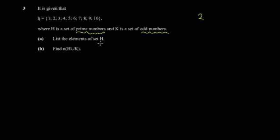First, list the elements of H. H equals, then you put the curly brackets. For prime numbers, one is not a prime number—this is one of the most confusing parts about prime numbers for students. One is not a prime number because it only has one factor. Prime numbers have two factors: one and another number. So one is not included, but two is, then three.